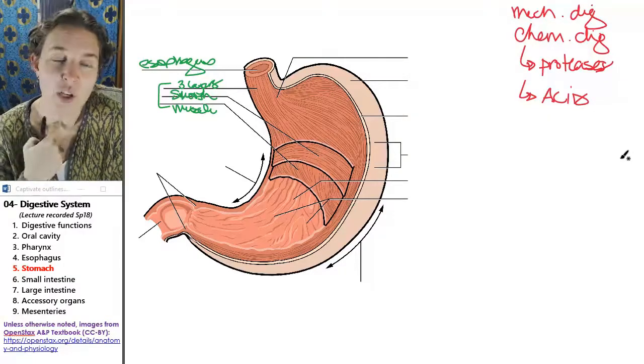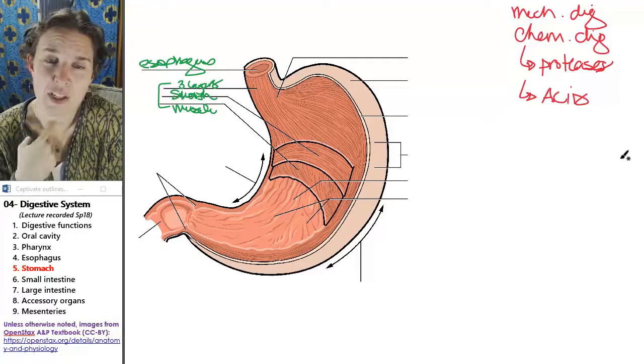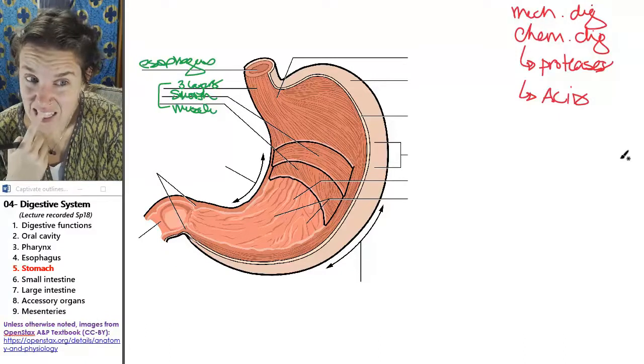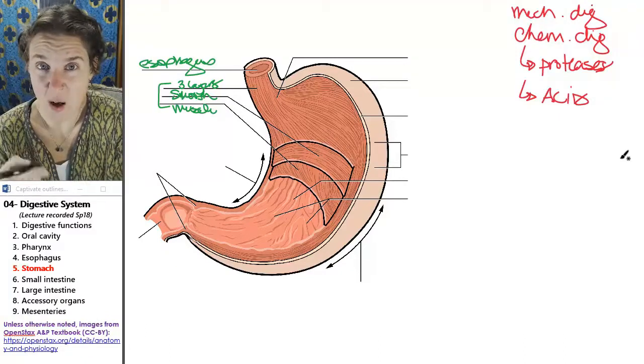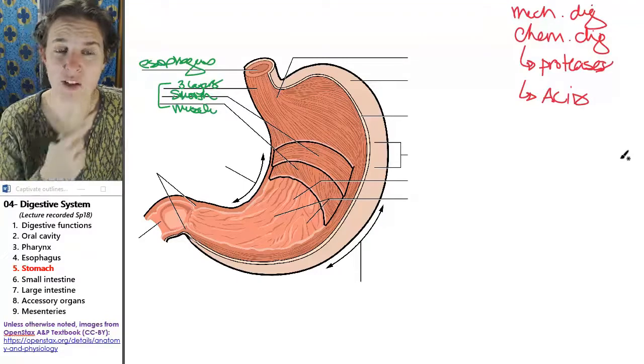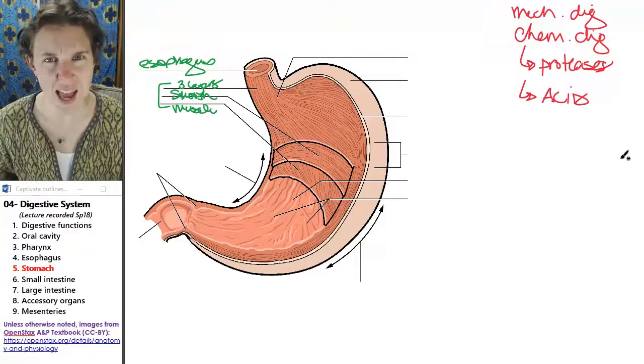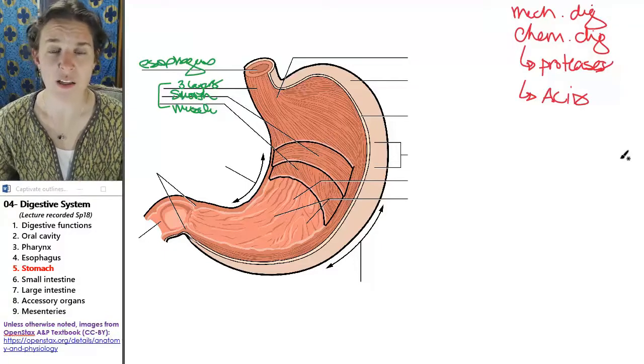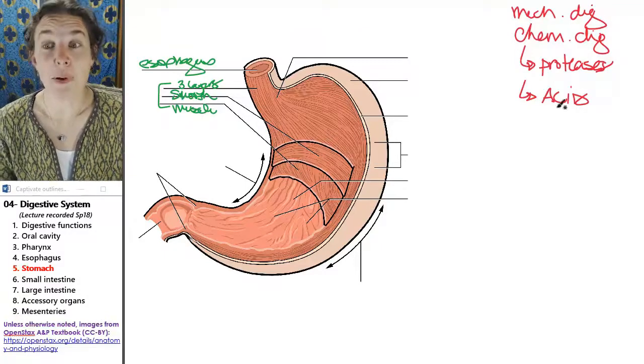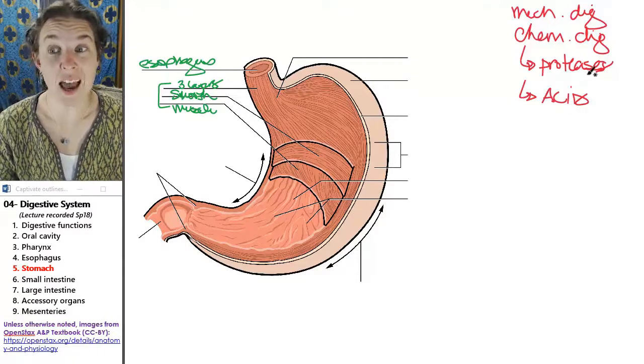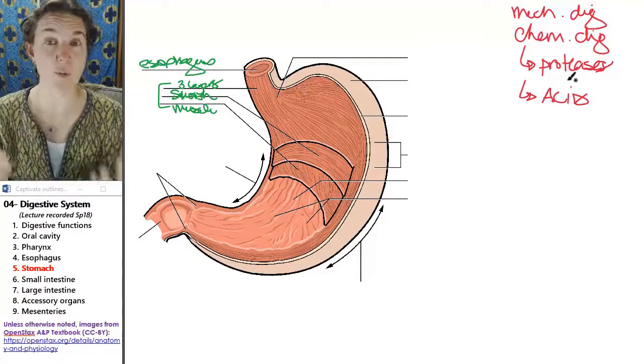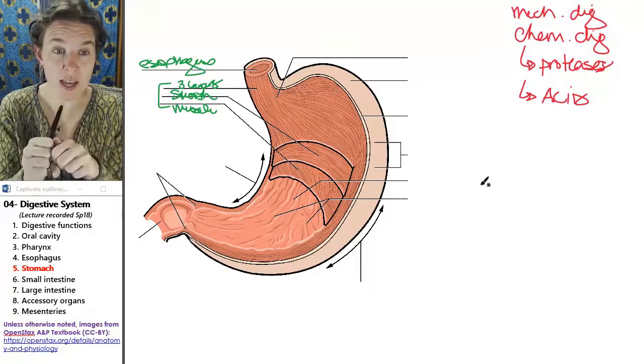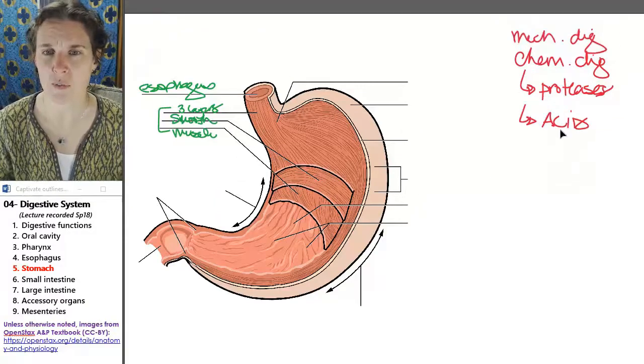That's why when you vomit up your stomach acid, it hurts. That is an unpleasant thing, and it can destroy your teeth if you vomit frequently. Your teeth, the enamel on your teeth can be broken down by the acid, the stomach acid. So barfing is not fun because of the stomach acid, but the stomach acid actually changes the shape of the protein that you eat and allows the proteases to do their job of chemically breaking down some of those proteins.